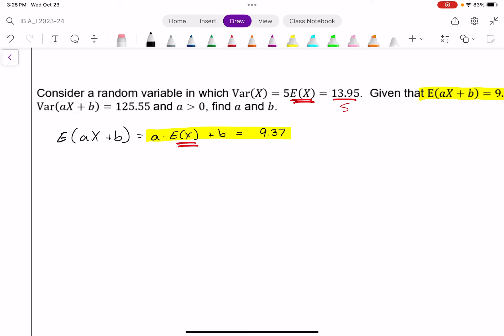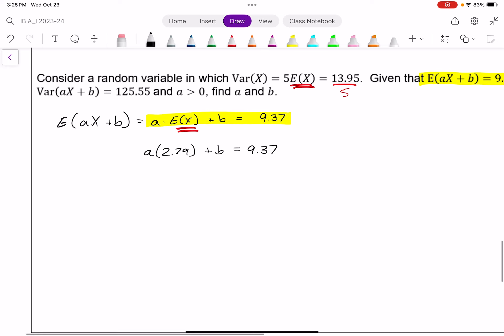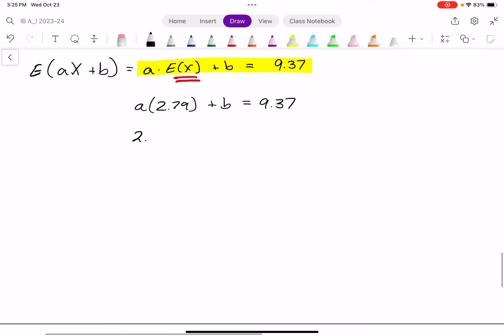Which means I can say A times 2.79 plus B equals 9.37. To write this more conventionally, I'll put the coefficient first. So I get 2.79A plus B equals 9.37. No point in me going on from here. I have two variables with one equation.